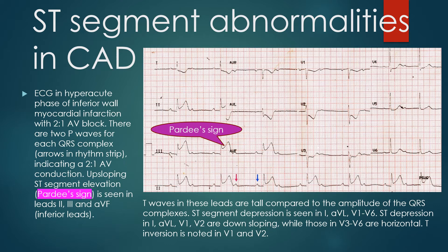This ECG shows the hyperacute phase of inferior wall myocardial infarction with 2:1 AV block. There are two P waves for each QRS complex, as noted in the rhythm strip, indicating 2:1 AV conduction. Upsloping ST segment elevation (Pardee sign) is seen in inferior leads 2, 3, and AVF. T waves in these leads are tall compared to the amplitude of the QRS complexes. ST segment depression is seen in leads 1, AVL, and V1 to V6.